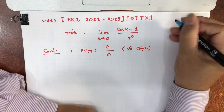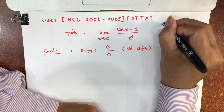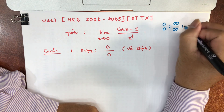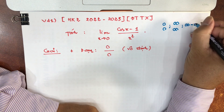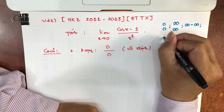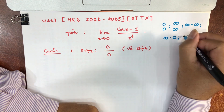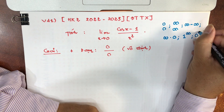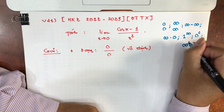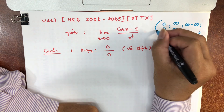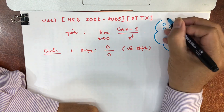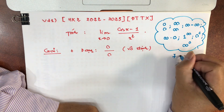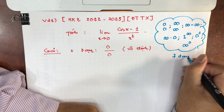Nhắc lại: có 7 dạng vô định: 0/0; vô cùng chia vô cùng; vô cùng trừ vô cùng; vô cùng nhân 0; 1 lũy thừa vô cùng; 0 mũ 0; và vô cùng mũ 0. Cả lớp lưu ý là có tổng cộng 7 dạng vô định.